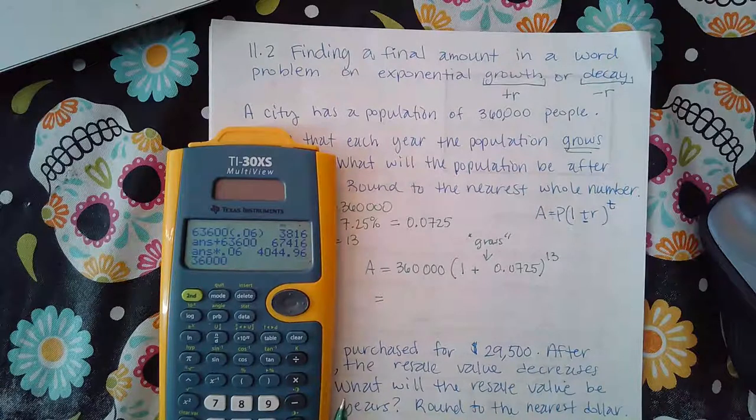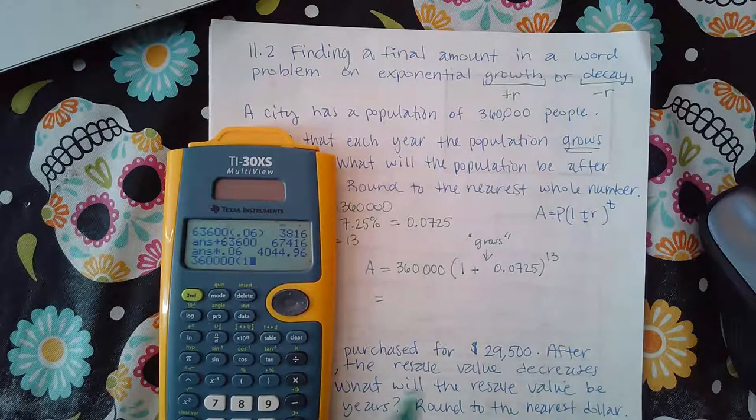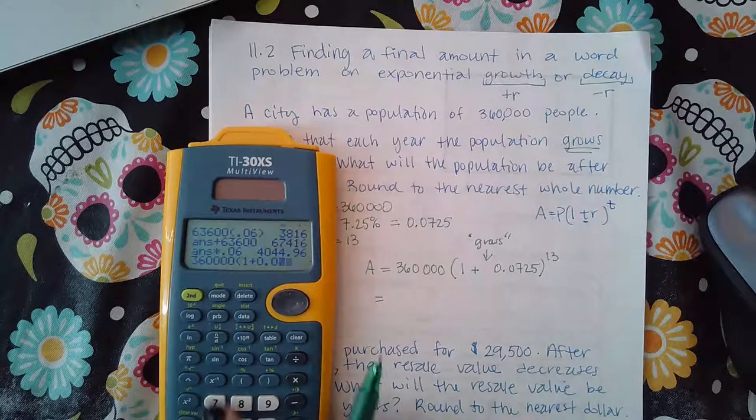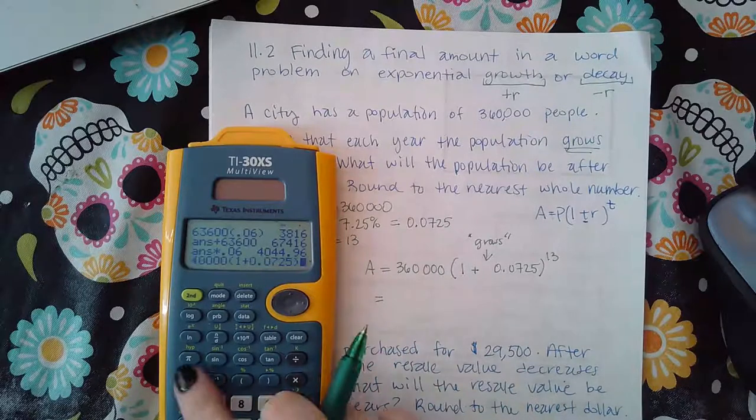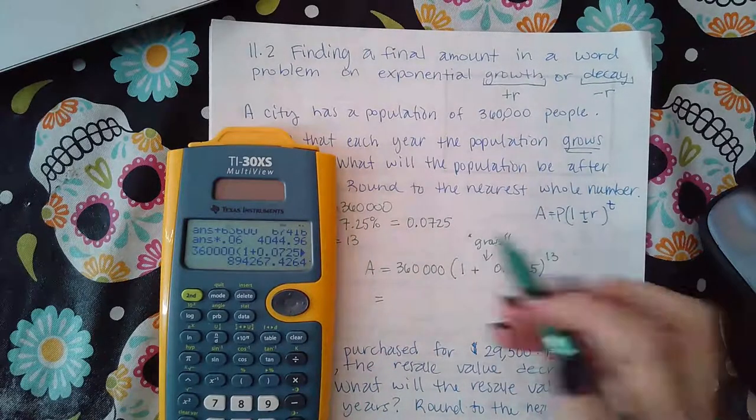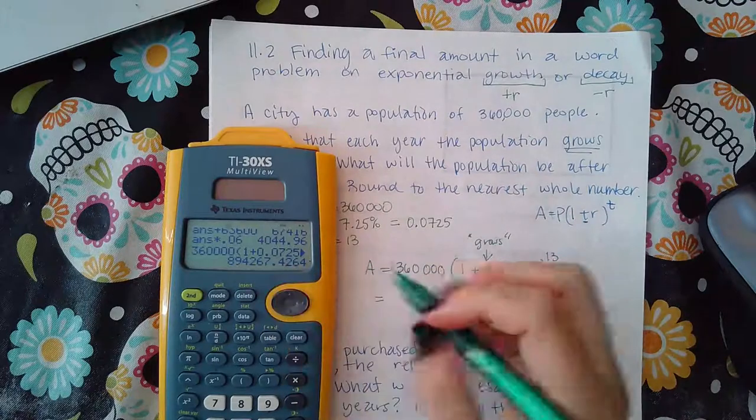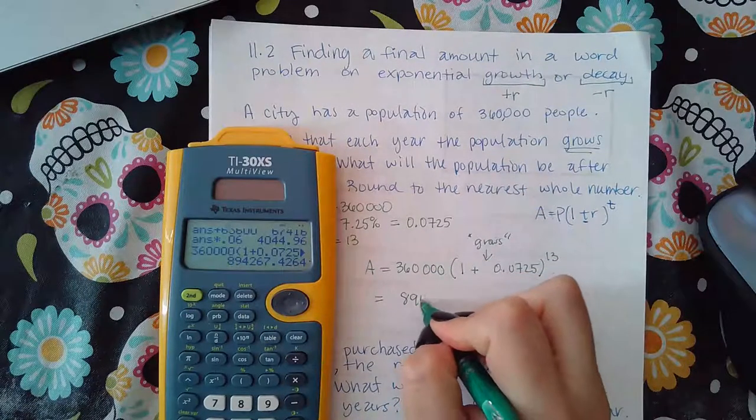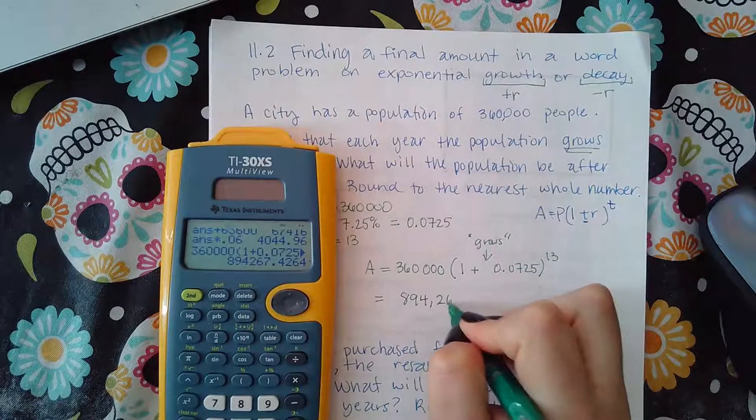360,000, parentheses 1 plus 0.0725, close it, raise it to the 13th power. And if I round it to the nearest whole number, it's going to be 894,267.